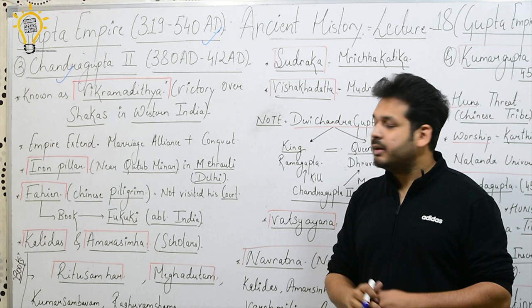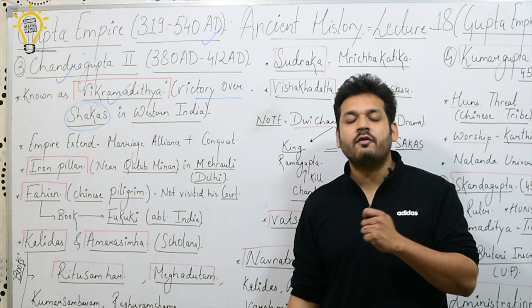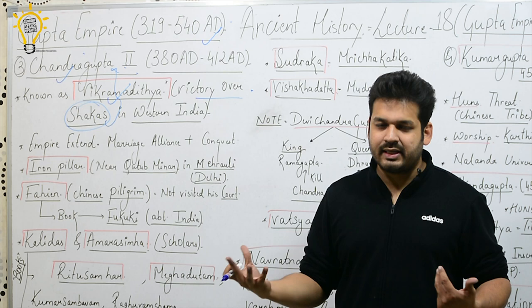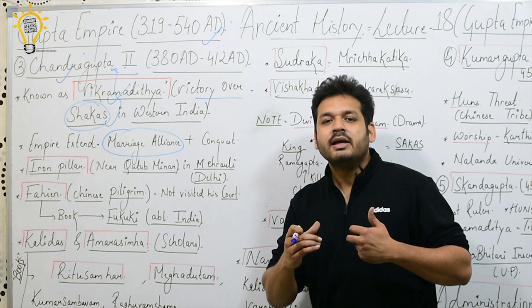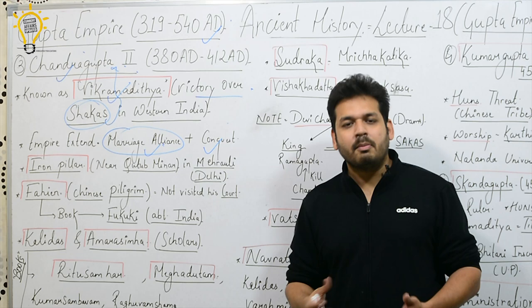Chandragupta II is famous because he is known as Vikramaditya. Remember, Vikramaditya means victory over the Shakas. The Shakas were the rulers of Western India, and he defeated them. Chandragupta II extended the Gupta Empire further through marriage alliances — marrying into other kingdoms — and also through conquests, capturing many areas, so the empire was greatly extended.